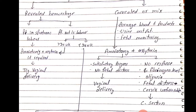For revealed hemorrhage: if the patient is in spontaneous labor, perform amniotomy plus oxytocin and try for vaginal delivery. If the patient is not in labor, assess the period of gestation. If more than 34 weeks, perform amniotomy plus oxytocin and try for vaginal delivery. If less than 34 weeks, also amniotomy plus oxytocin then trial of vaginal delivery.